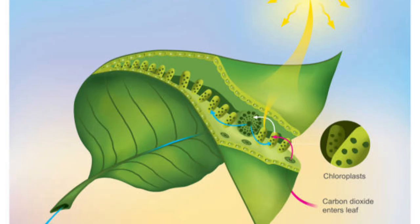Chlorophyll is the green pigment in leaves that absorbs sunlight. It captures light energy, which is essential.